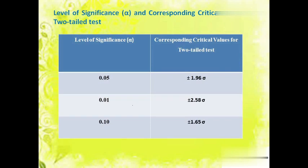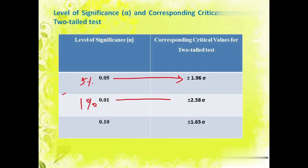This table shows the level of significance and corresponding critical values for a two-tailed test. For 5% level of significance or 0.05, the critical value is plus minus 1.96 sigma. For 1% or 0.01 level of significance, the critical value is plus minus 2.58 sigma. Whereas for 10% level of significance, the critical value is plus minus 1.65 sigma. So from the table we know the critical values for 5%, 1%, and 10% levels of significance.